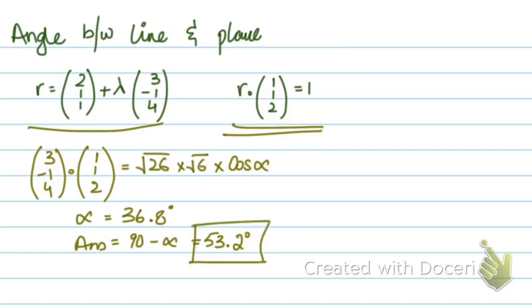But if your alpha is obtuse (greater than 90 degrees), you subtract 90 from alpha to get your angle between the line and the plane. So first, you dot the normal of the plane with the direction vector and solve for alpha. Once you have alpha, you subtract 90 from it if it's obtuse, or subtract alpha from 90 if it's acute, to find your angle between the line and the plane.